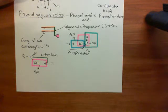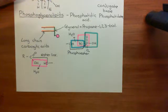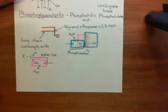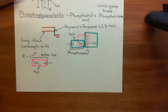This alpha subunit, which is of the family GαQ-11, is then going to go off and activate a phospholipase C enzyme that is within the beta family — so either phospholipase C-beta-1, phospholipase C-beta-2, phospholipase C-beta-3, or phospholipase C-beta-4.